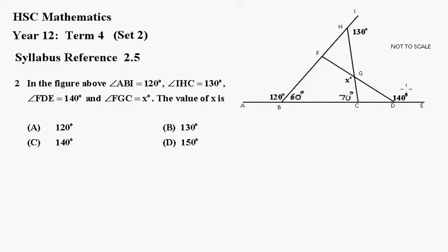Likewise, over here, this is the external angle to this triangle. So this angle up here must be 80 degrees, because 80 and 60 is equal to 140.